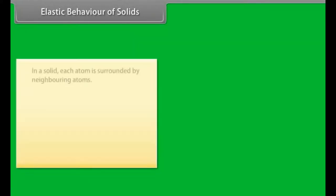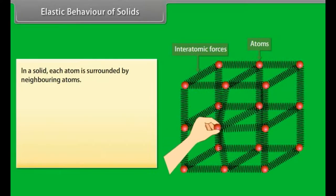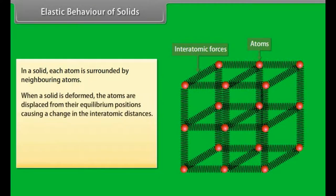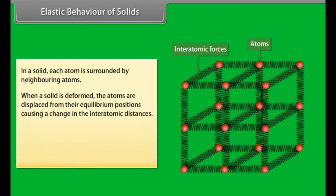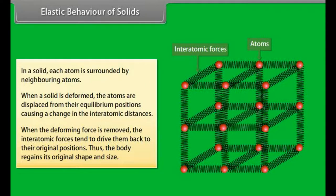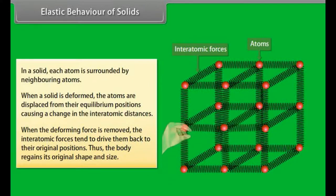In a solid, each atom is surrounded by neighboring atoms. When a solid is deformed, the atoms are displaced from their equilibrium positions, causing a change in the inter-atomic distances. When the deforming force is removed, the inter-atomic forces tend to drive them back to their original positions. Thus, the body regains its original shape and size.